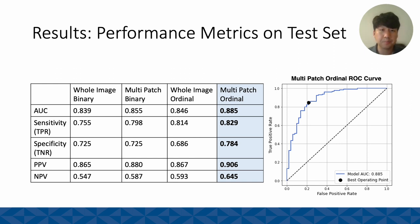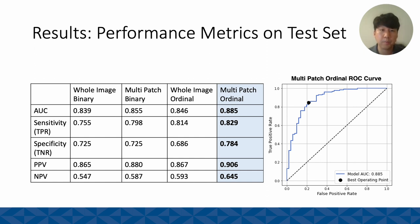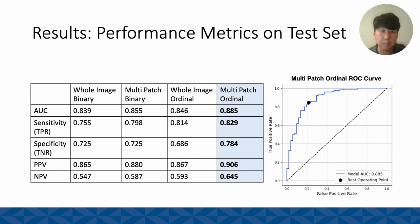Here are the results of our study. We performed an ablation study to see which configuration produced the best results, starting with using just the whole image with binary classification, all the way to using multiple patches with ordinal labels. The other configurations were multiple patches with binary classification, and whole image with ordinal labels. Based on the optimal threshold calculated using Youden's index, the metrics — sensitivity, specificity, positive predictive value (PPV), and negative predictive value (NPV) — are shown. Using multiple patches with ordinal labels gave the best results: AUC of 0.885, sensitivity of 0.829, specificity of 0.74, PPV of 0.906, and NPV of 0.645.